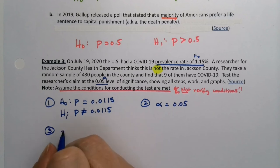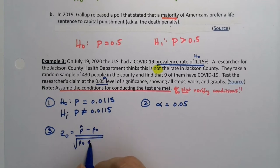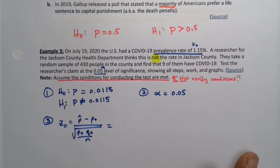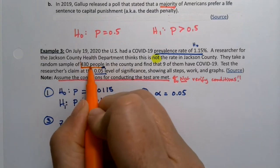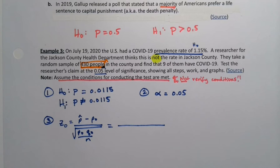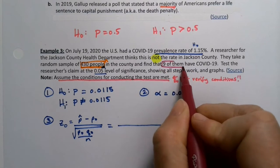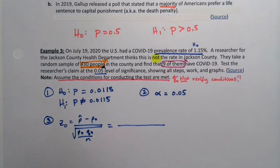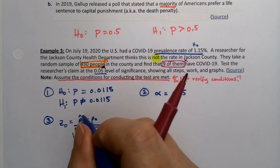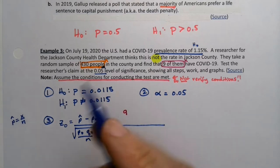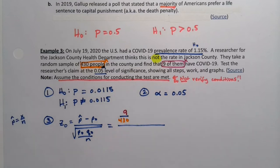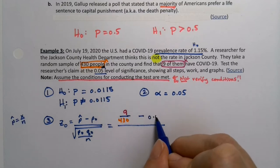Step three, the formula step. Z0 equals P hat minus P0 over the square root P0 Q0 over N. P hat, well, I don't really know P hat, but I do know that it was nine out of 430. So here's N and there were nine of them, that's X. So I'm just going to write it as nine out of 430 and we'll let the computer figure it out.